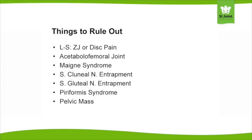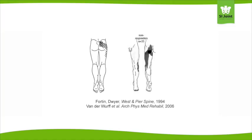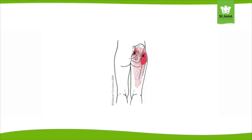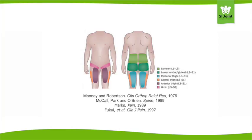Our focus is on SIJ-mediated pain, but as Dr. Kitchell pointed out, there are a number of other clinical entities which share confluent sclerotomal referral zones. Here is our SIJ pain map. Note the remarkable overlap with the acetabulo-femoral joint, which would include both CAM and pincer type impingement syndromes, or perhaps AVN, the piriformis, and the lower lumbosacral facets.